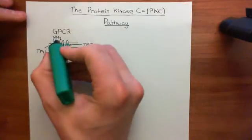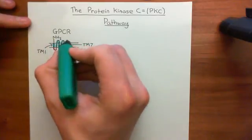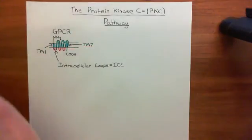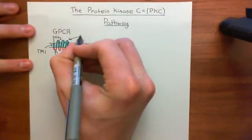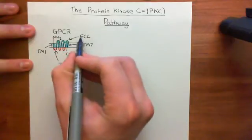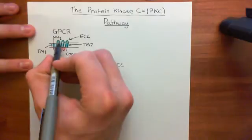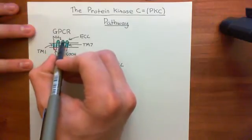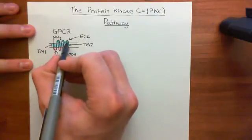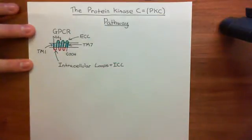We also have extracellular loops, which I'll colour in turquoise. These are called the extracellular loops, abbreviated ECL - E for extra, C for cellular, L for loop. The first one is ECL1, the second ECL2, and the third ECL3. That covers the nomenclature for the different portions of the GPCR structure.